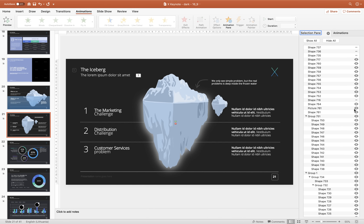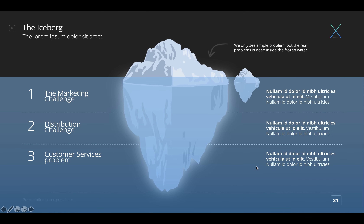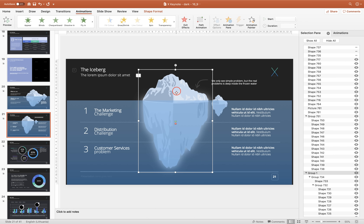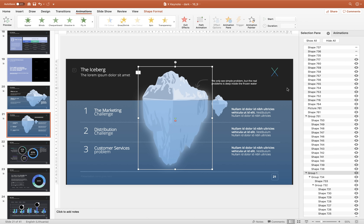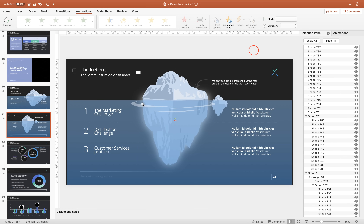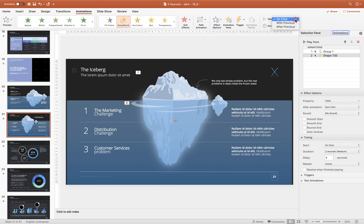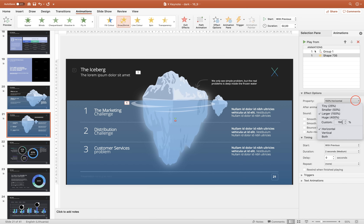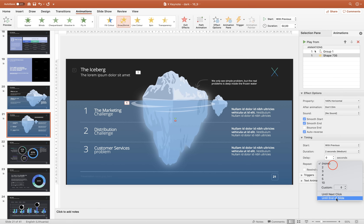Let's go back to the Selection Pane and unhide the blue rectangle, which represents the water. Let's move the iceberg a little bit upwards. Now let's unhide the ripple shapes. Select the ripple shape on the left side and apply a Grow/Shrink animation to it. Make sure it starts With Previous, so it starts with the first animation. In the effect options, choose Horizontal so the ripple shape grows horizontally by 140%.